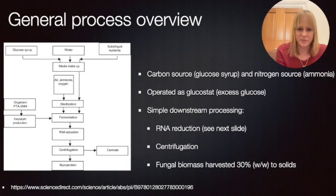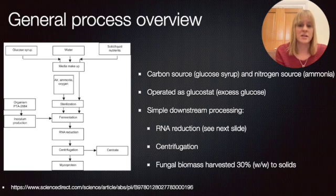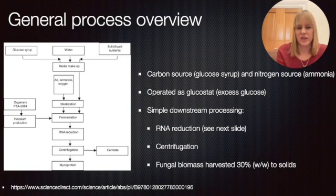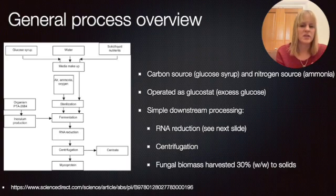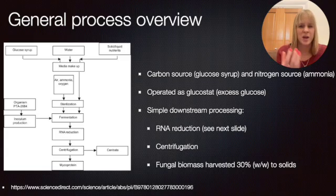After we finish the fermentation - which takes a couple of days to start and then runs continuously in steady state - we need to reduce the RNA content. Then it becomes simpler: all you need to do is centrifuge it. You can harvest the fungal biomass with up to 30% weight percent solid content, and that gives you the microprotein. However, that's not necessarily directly Quorn straight away - we'll focus on what happens to the microprotein to give it the specific structure needed.